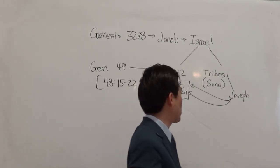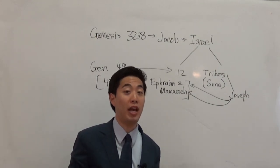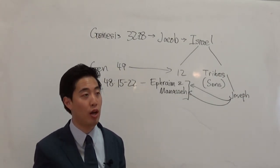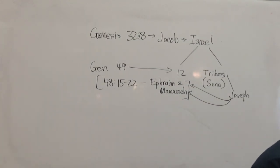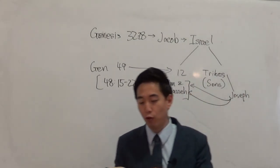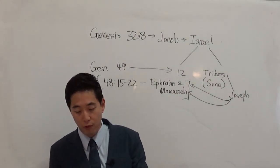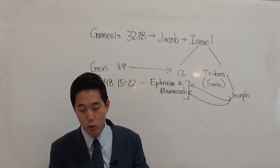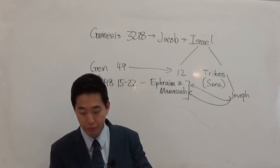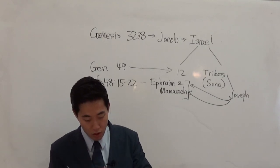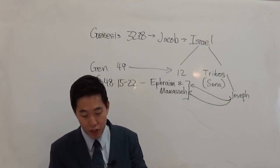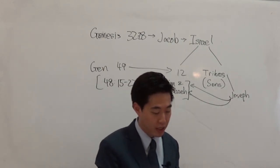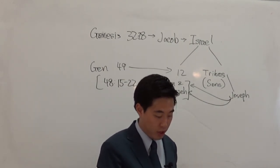Now addressing the split between northern and southern kingdoms: this is found in the book of 1 Kings, specifically chapter 12. That's where the division started.